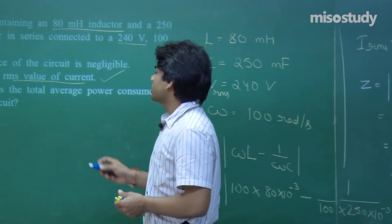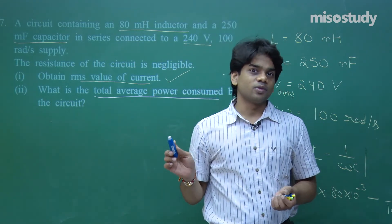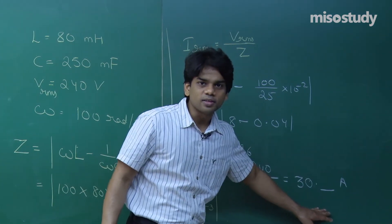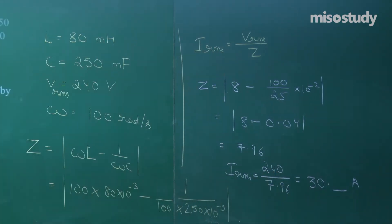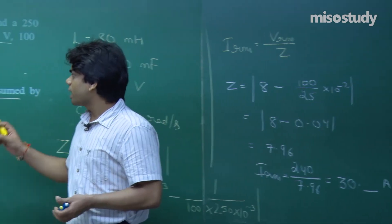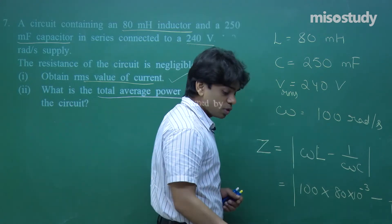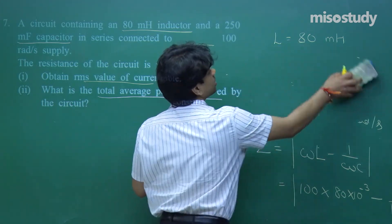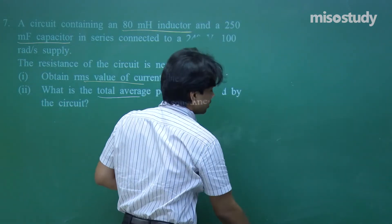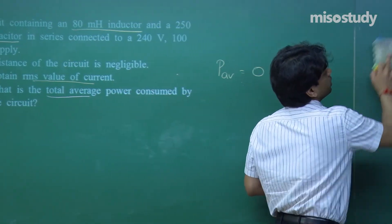The total average power consumed by the circuit: since there is no resistance, the average power in a circuit with only capacitor and inductor turns out to be zero. That is the answer for the second part.